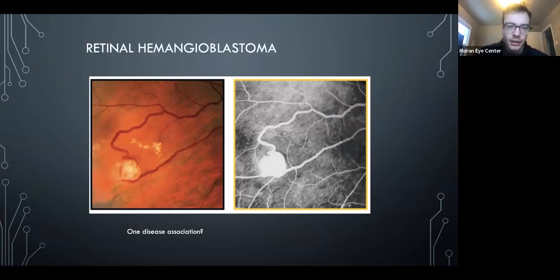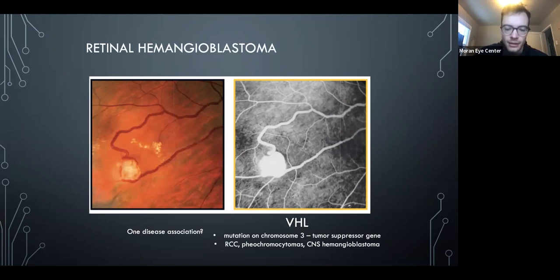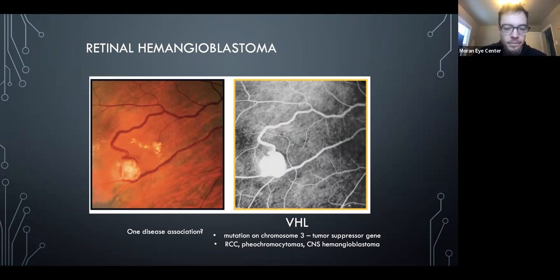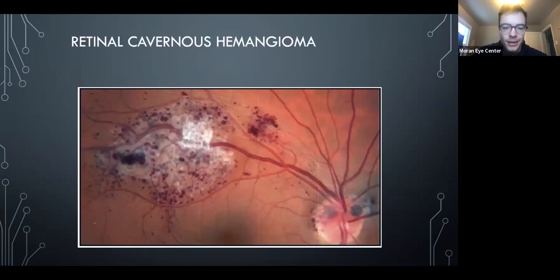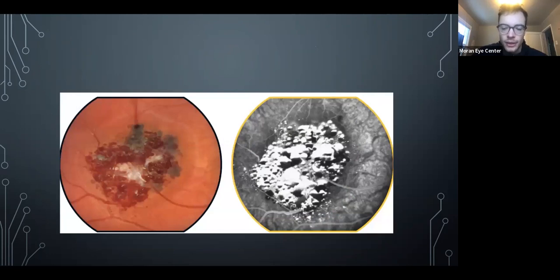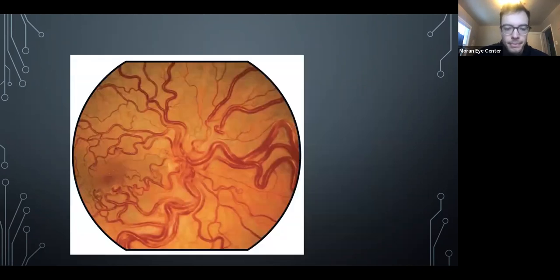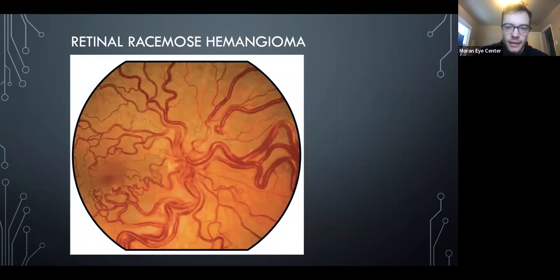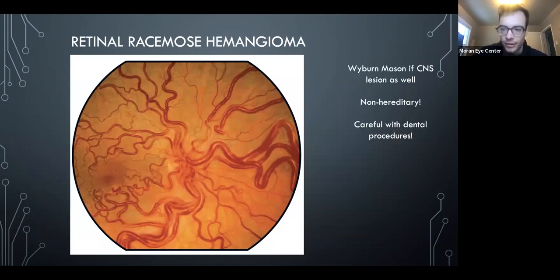Von Hippel-Lindau syndrome presents with a retinal capillary hemangioblastoma. Important associations: renal cell carcinoma, pheochromocytoma, and CNS hemangioblastomas. The mutation is on chromosome 3 — VHL is three letters, chromosome 3. Retinal cavernous hemangioma shows fluid-fluid levels with clotted blood and fluorescein above. If you see this, think about brain hemangiomas — the combination is Wyburn-Mason syndrome, which has no gene and is not hereditary, and is associated with bleeding during dental procedures.